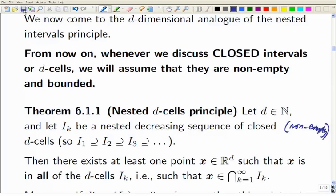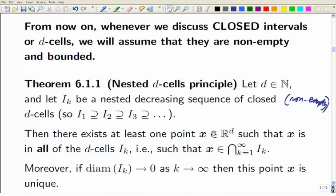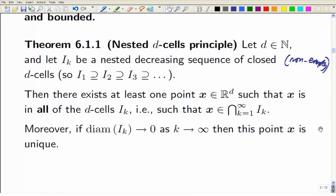So now you suppose you've got some decreasing sequence of closed d-cells. You can think two-dimensionally if you like. So I think the closed rectangles getting smaller and smaller, and the next one is always inside the previous one. The claim is that there must be something that's common to all of them, something in the intersection of the lot, at least one point that's in all of them. You can actually use the one-dimensional nested intervals principle to prove the two-dimensional and the three-dimensional and so on one, if you think about what's going on with the coordinates. So you can actually deduce the higher-dimensional one from the lower-dimensional one.